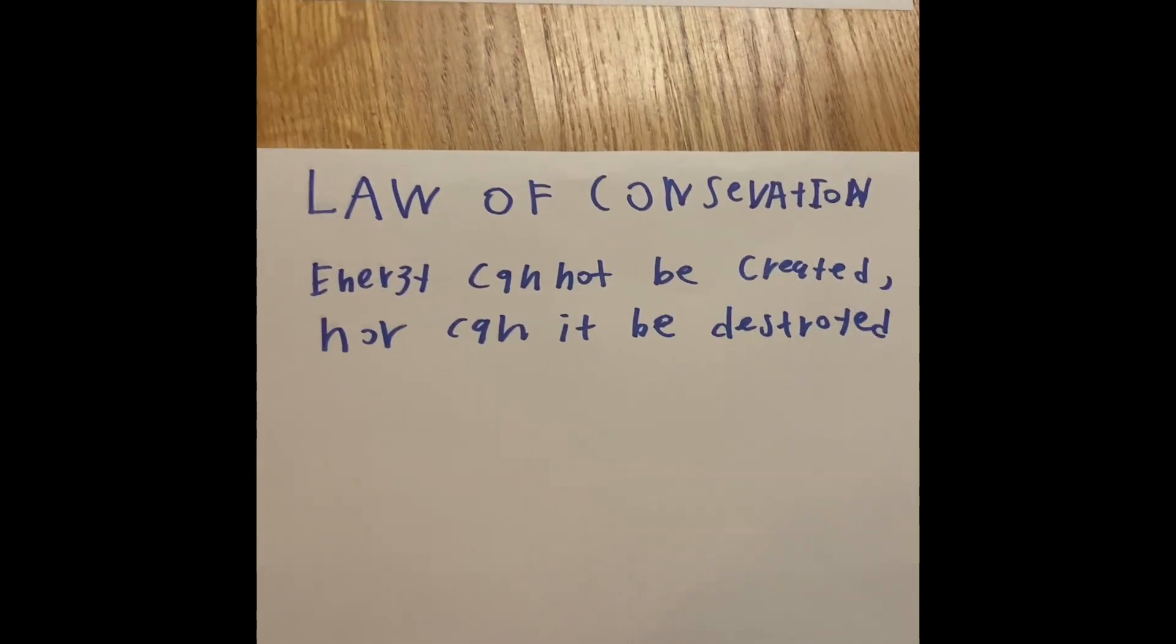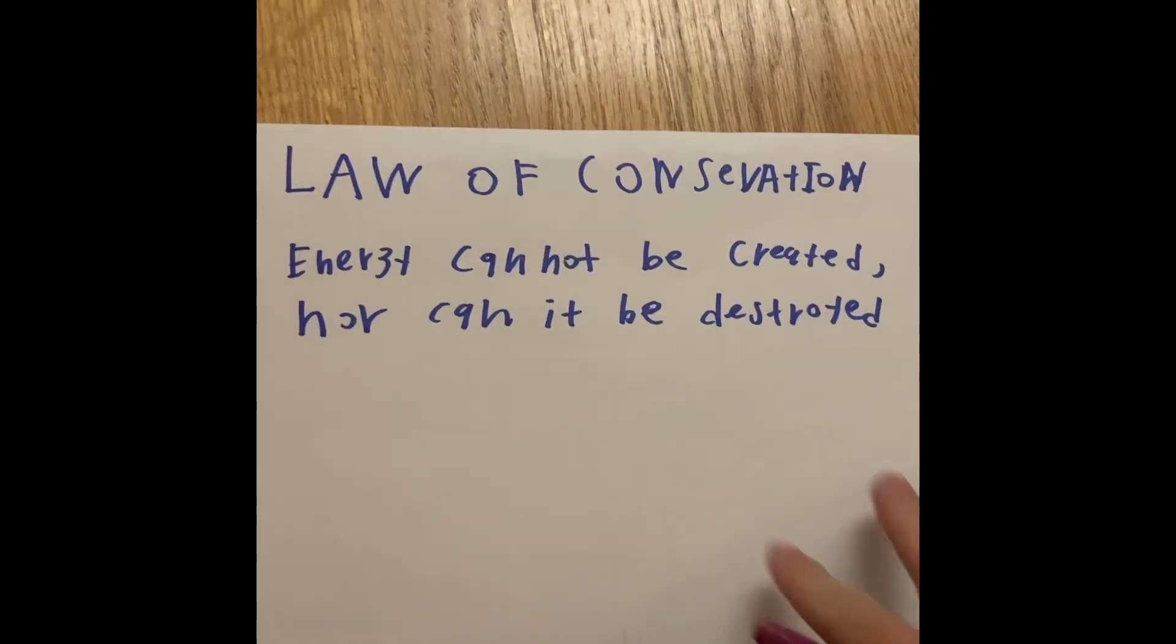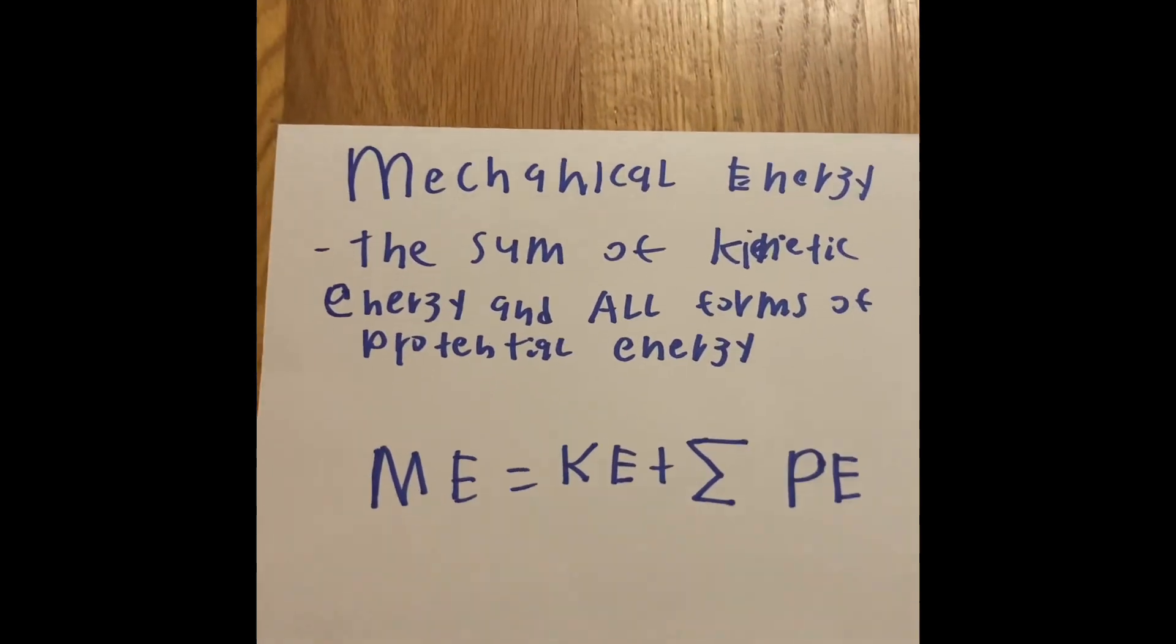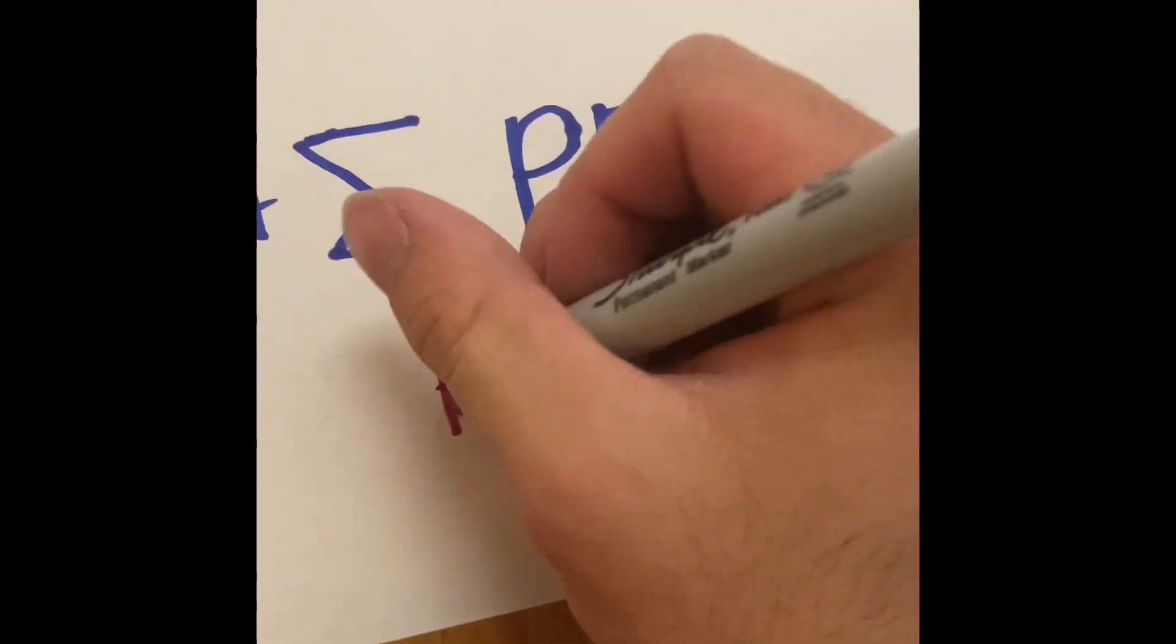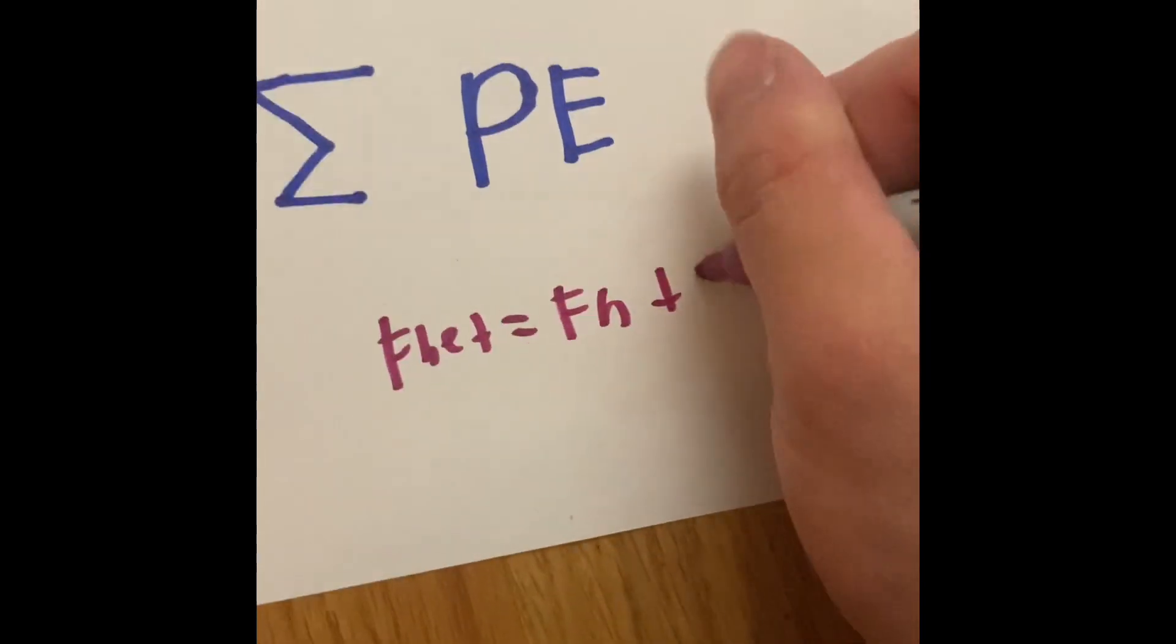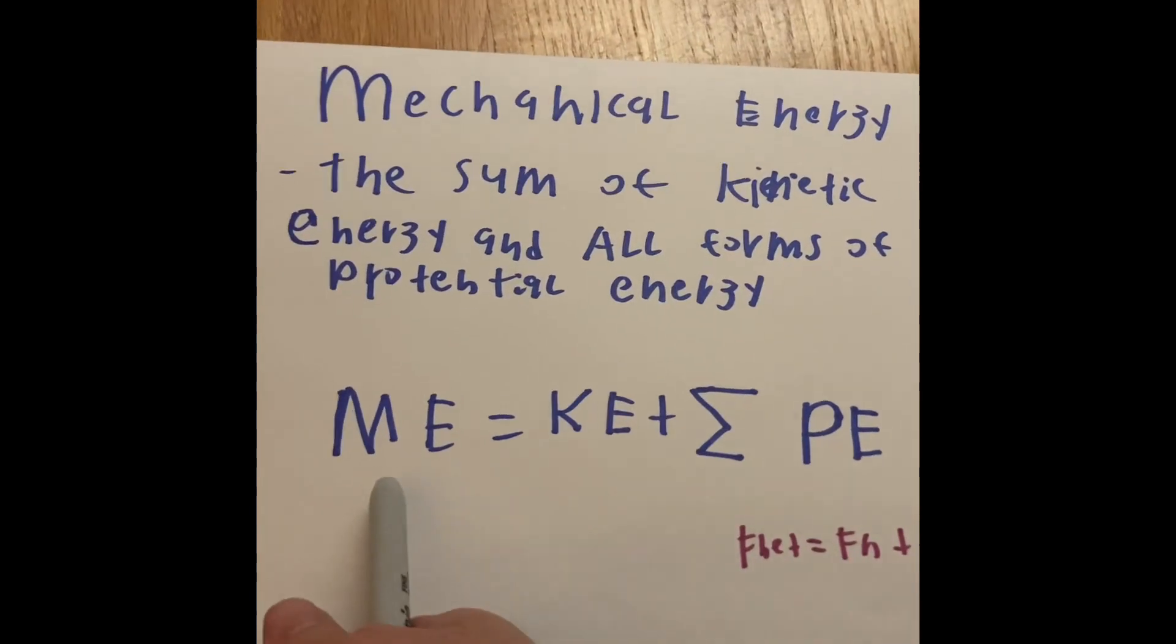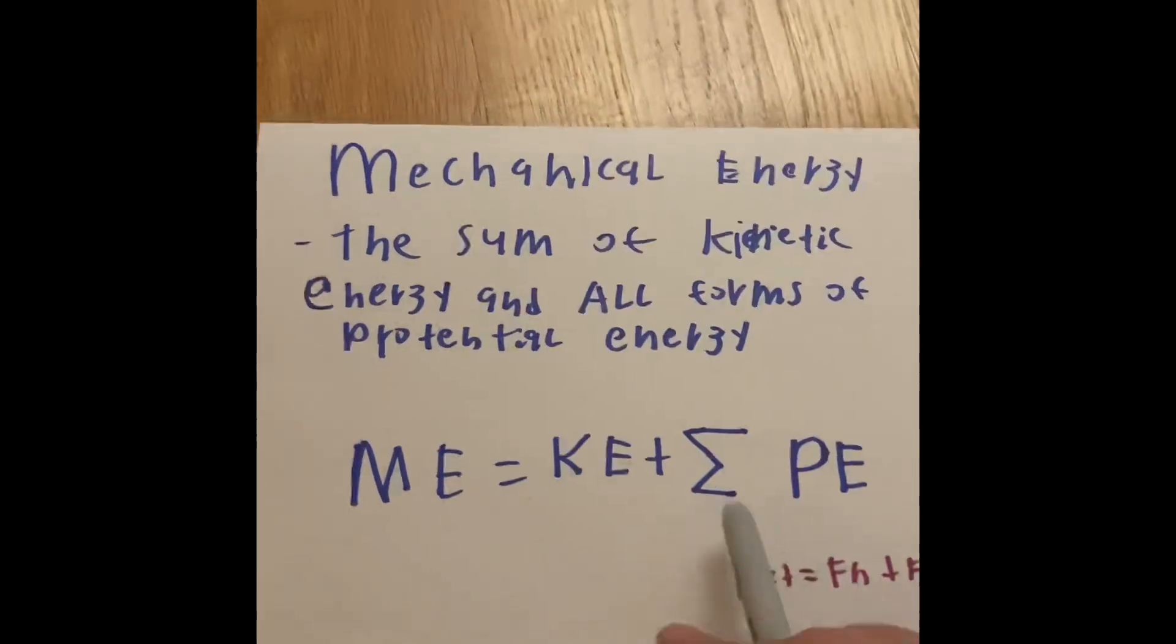But if you wanted to calculate the idea of kinetic energy and potential energy, then there is one more thing that we can look at: the mechanical energy. So the mechanical energy is basically the sum of kinetic energy and all the forms of potential energy. Just like in the other math videos, when we say F net is going to be combined of everything, like F net equals Fm plus Fg, we can treat the same way with mechanical energy. The mechanical energy is equal to kinetic energy plus every potential energy or all forms of it added together.